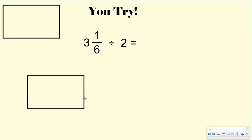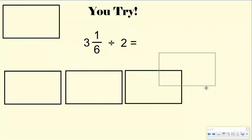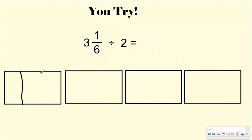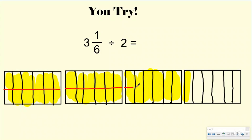Hopefully you went ahead and tried it. Let me go ahead and get my three wholes right here, and one more for my one-sixth. I'm going to split my three wholes into six because that's what my denominator is, and again I want to do that vertically. Then I'm going to go ahead and highlight — or lightly shade in — your three wholes. And then one more sixth.